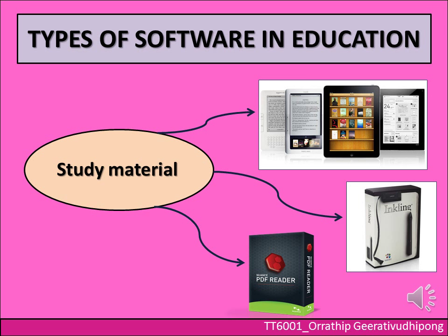The first type of software in education is study materials. This category translates or provides an actual learning method in digital format, such as ebooks or study books, or software that can read those formats. Examples include Inkling, e-readers, and PDF readers.